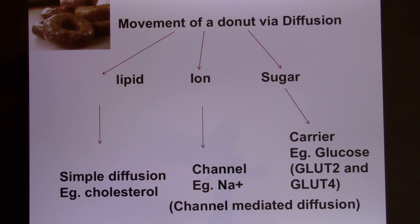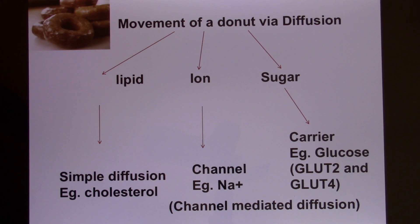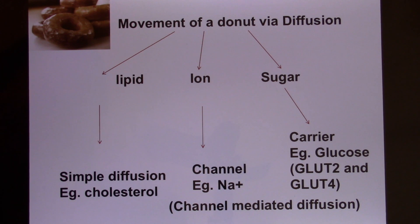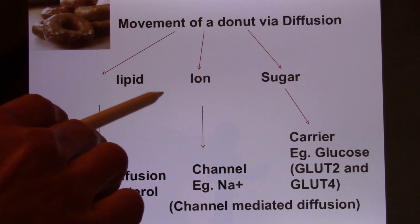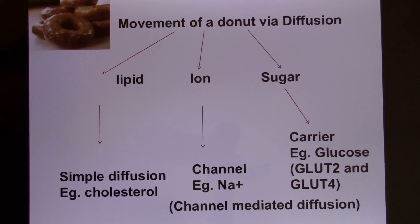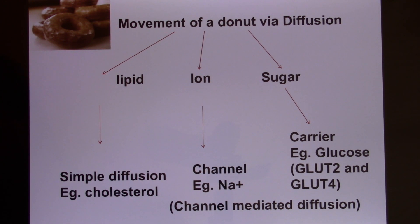When you feel hungry, you eat a doughnut. Let's see how the doughnut moves into your body from the outside. After you eat the doughnut, your digestive system cuts it into small molecules — lipids, ions (like salt), and sugars. The lipid part is the easy one. Cholesterol can use simple diffusion to move through the cell membrane because the membrane is made of phospholipid.